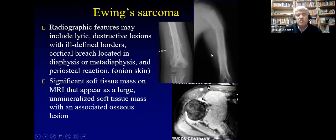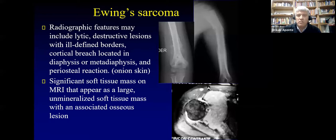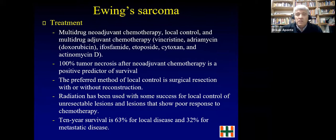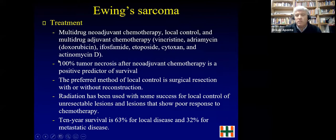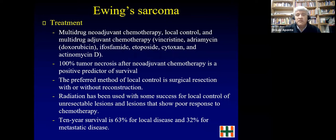Chemotherapy significantly increases survival in Ewing sarcoma. The treatment is the same sequence: chemotherapy, then local control with surgery or radiation, then more chemotherapy. The key difference from osteosarcoma is that 100% tumor necrosis is required. If the resected tumor shows less than 100% necrosis, you must add radiotherapy. So you can use either surgical resection or radiotherapy, but surgical resection is preferred. If less than 100% necrosis is achieved, radiotherapy is added.